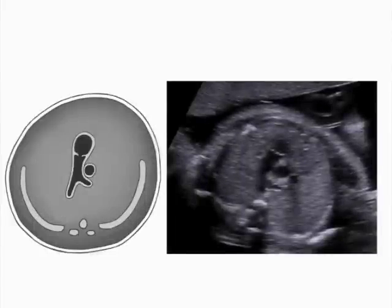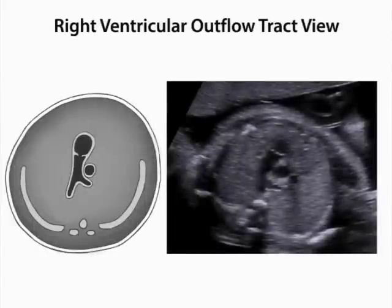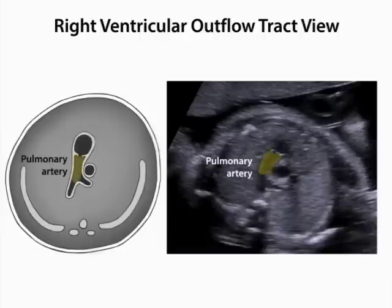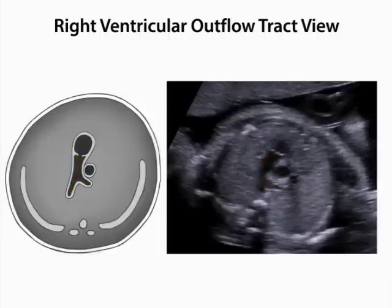Structures visible in the right ventricular outflow track view include the right ventricle, the pulmonic valve, and the main pulmonary artery. This main artery subsequently branches into the left and right pulmonary arteries. The ascending aorta is seen in cross-section and is perpendicular to the pulmonary artery in this view.